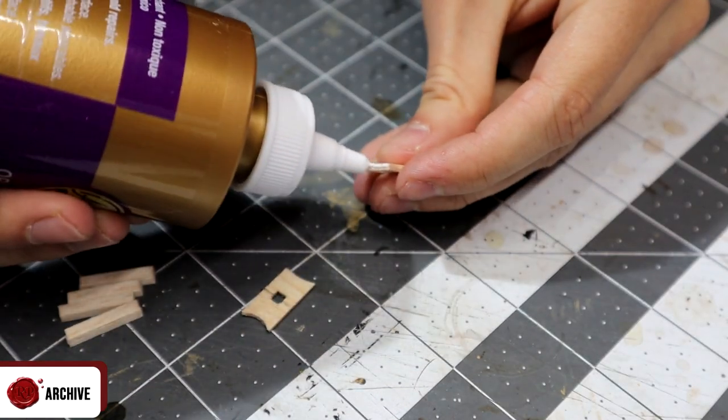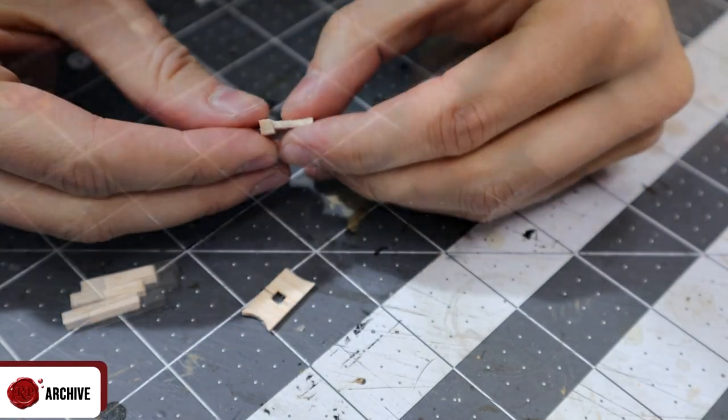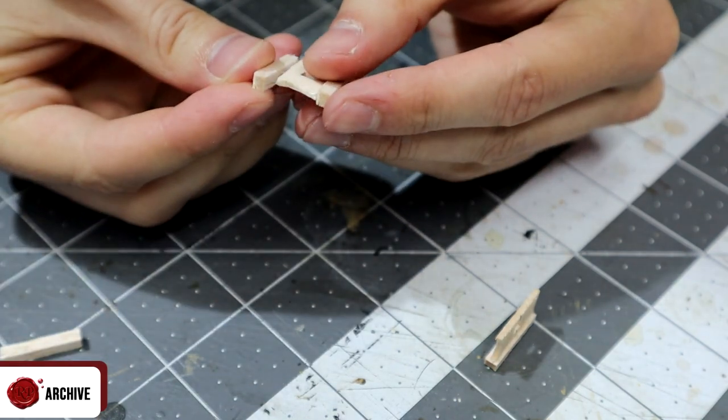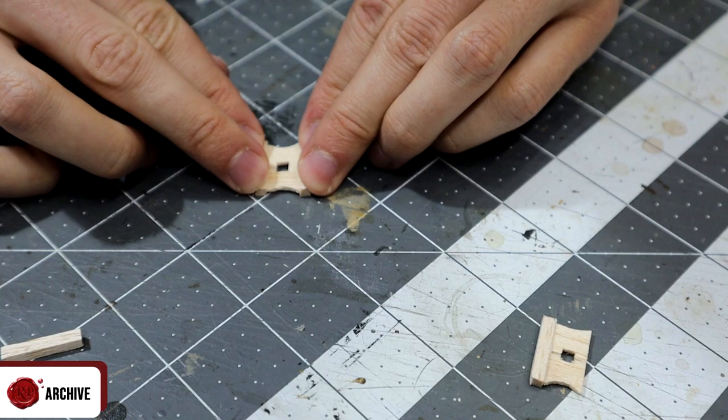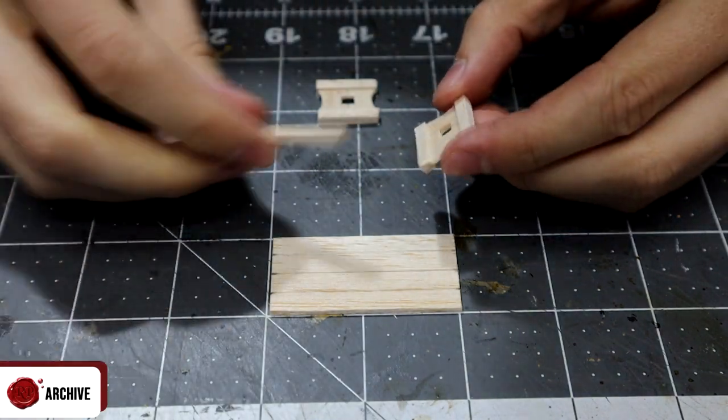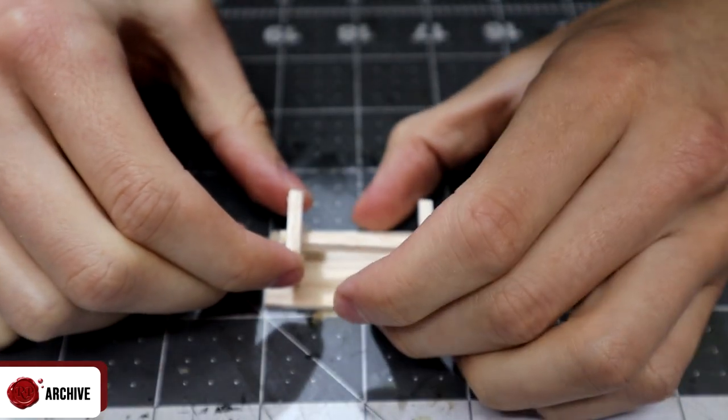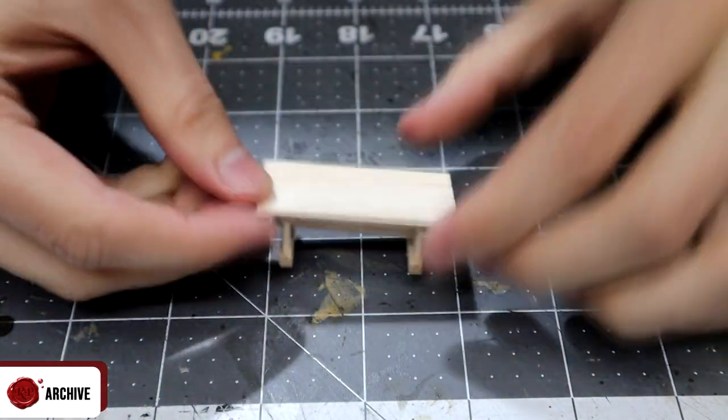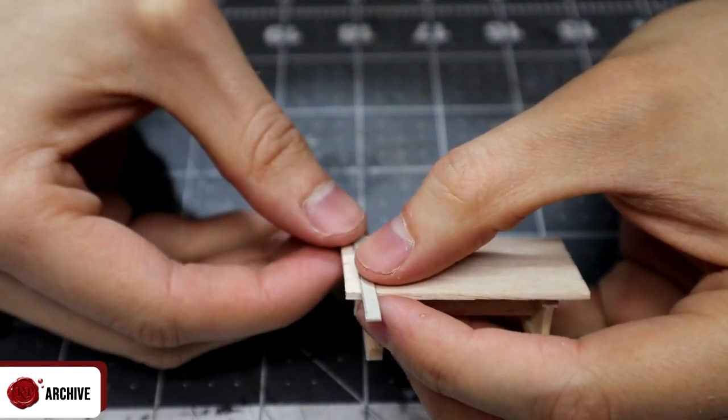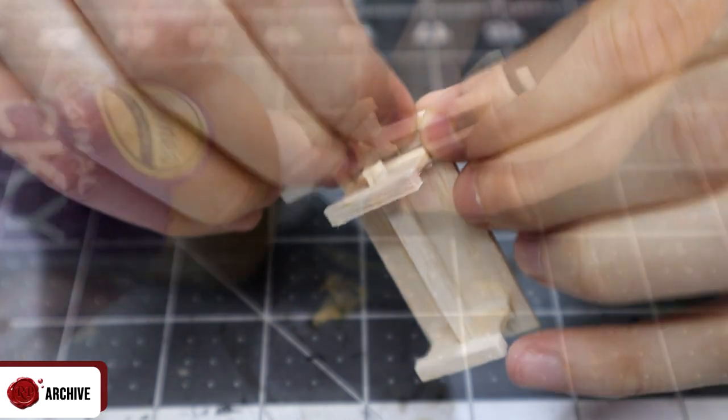Then I grabbed two more pieces of one-eighth of an inch square balsa, this time cut to three quarters of an inch long, and glued one to the bottom in the center of the plank, nice and straight. I waited for that to dry a little and then placed another one on the top in the same way and laid them down flat against the table to make sure that they were level. Then just rinse and repeat, and once you have both, I slid the plank through both of the holes and lined up the two table leg pieces with the bottom of the table.